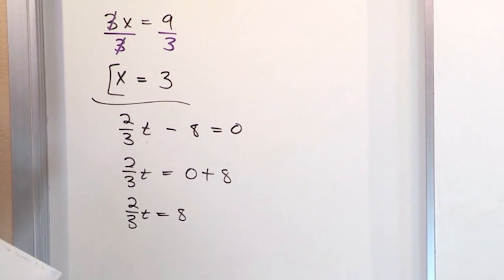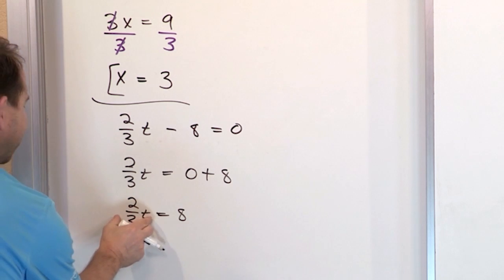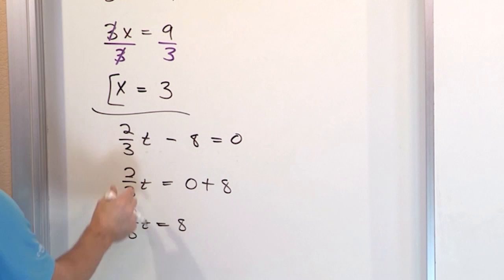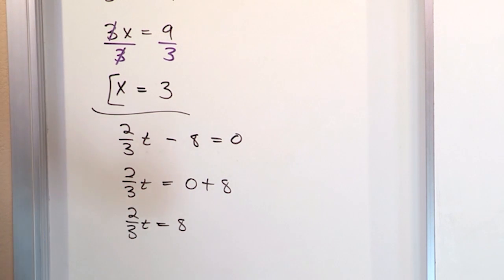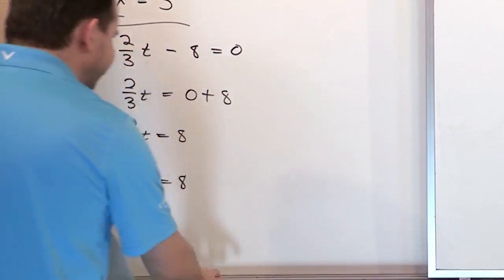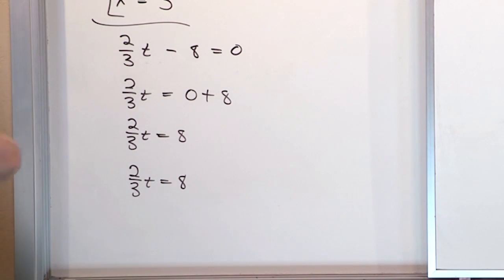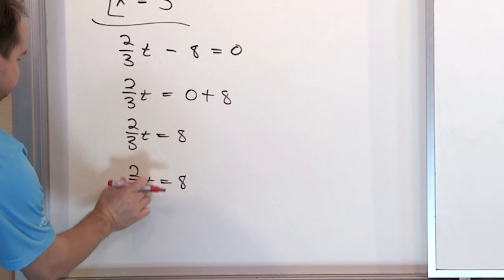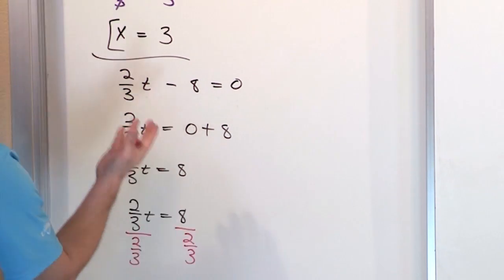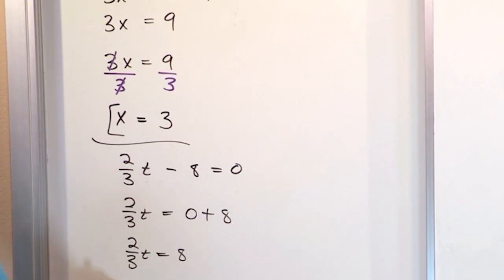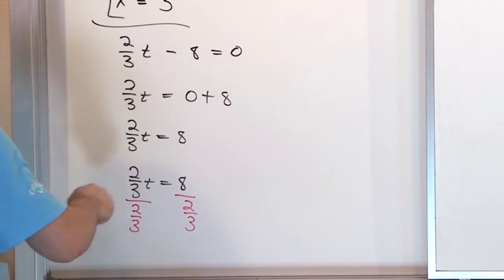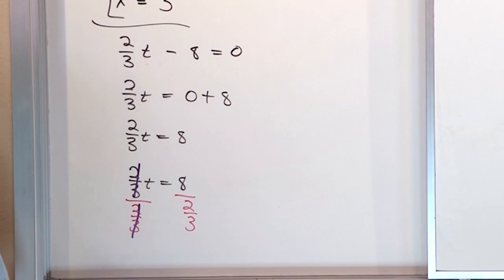Now we want to get t by itself. Just like before where we had 3x, here we have a number in front of t — it's just that this number is a fraction. So I'm going to divide both sides by two-thirds. Two-thirds divided by two-thirds cancels to give 1, leaving just t on the left. On the right we have 8 divided by two-thirds.